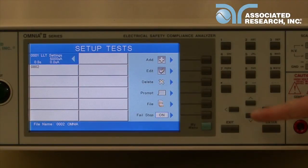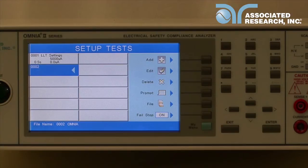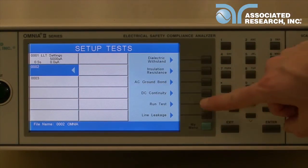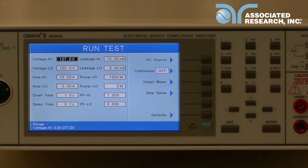Press the down arrow key to move to the next available step and once again press the add key. Select functional run test. This will take you to the run test parameters window.